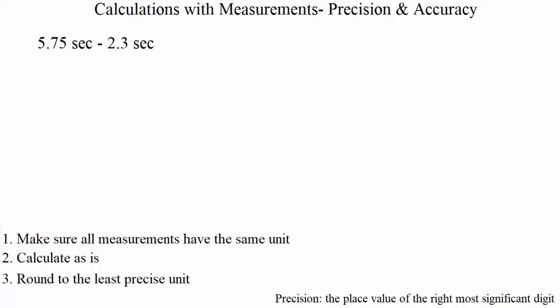We have 5.75 seconds and 2.3 seconds, so the units match. Step two: calculate as-is, so go ahead and do whatever the problem is asking — add, subtract, multiply, divide. Taking 5.75 minus 2.3, we get 3.45.